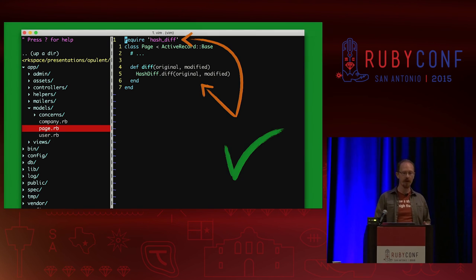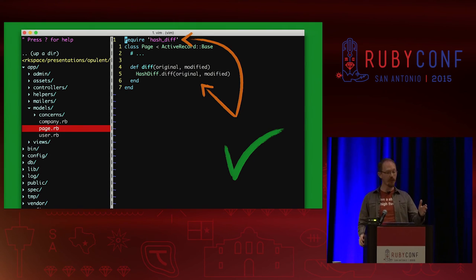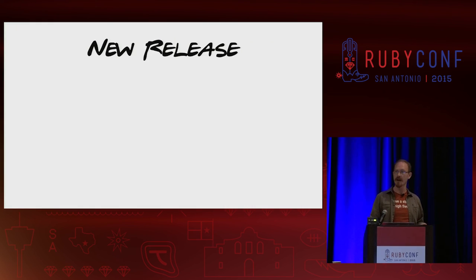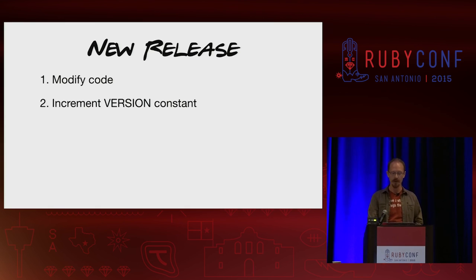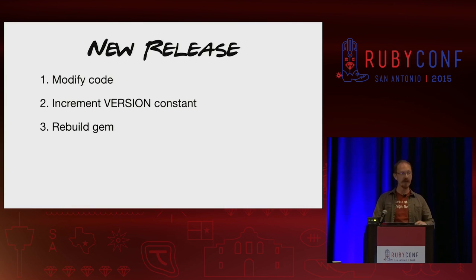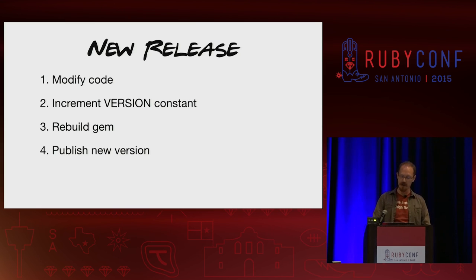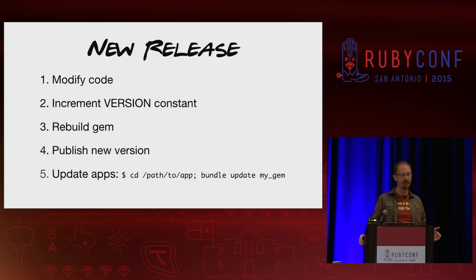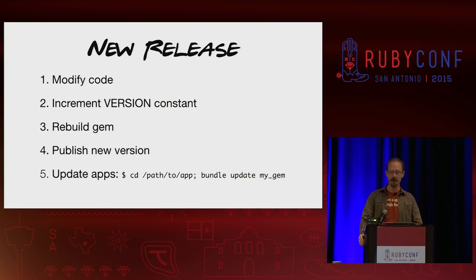Whenever you want to create a new release, you're going to follow a very similar process: modify your code, increment the version constant — you actually do have a new version now — rebuild the gem via the same commands, publish the new version, and then update your apps. It's really quite simple and doesn't get too much more complicated than that.